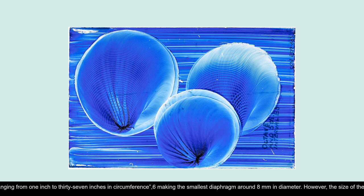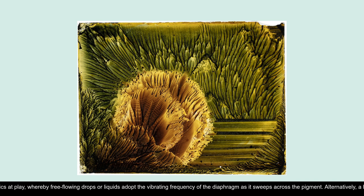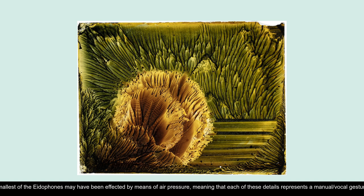However, the size of these smaller details, as little as two millimeters across in places, marks them as perhaps originating not from a gesture of the hand and voice with a specific eidophone, rather it suggests an effect structural to the physics at play, whereby free-flowing drops or liquids adopt the vibrating frequency of the diaphragm as it sweeps across the pigment. Alternatively, a bulge in the diaphragm on the smallest of the eidophones may have been affected by means of air pressure, meaning that each of these details represents a manual/vocal gesture. This presents the intriguing possibility that these plates might constitute an aggregated and spatially arranged chorus of voices.